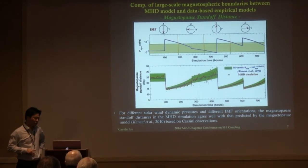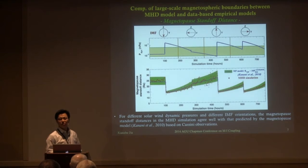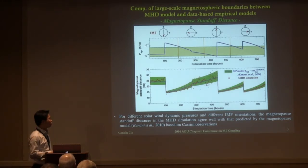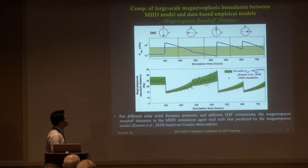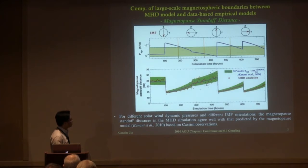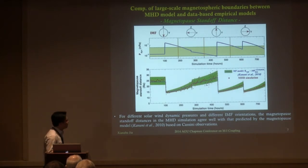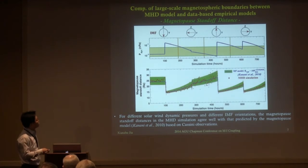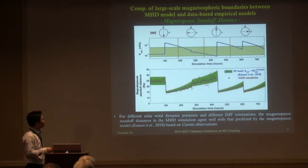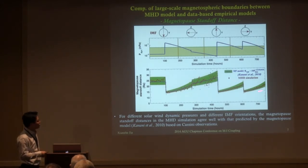The first thing we did was to make sure we got the large-scale structure of Saturn's magnetosphere agreeing with observations. We compare the standoff distance of the magnetopause with the empirical model established using Cassini observations. The simulated magnetopause location — shown by the red dots — is compared to the prediction from the Kanani et al. 2010 magnetopause model shown in the green shaded area. Throughout the whole simulation and for different IMF orientations, the agreement is very good. This gives us confidence that we have roughly the correct large-scale size of the magnetosphere consistent with observational inference.